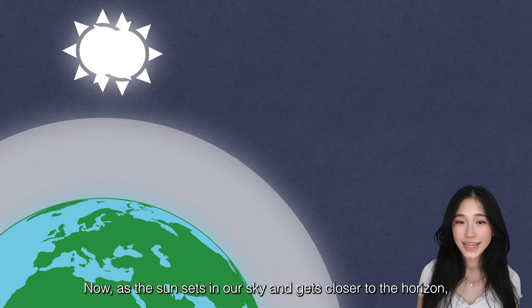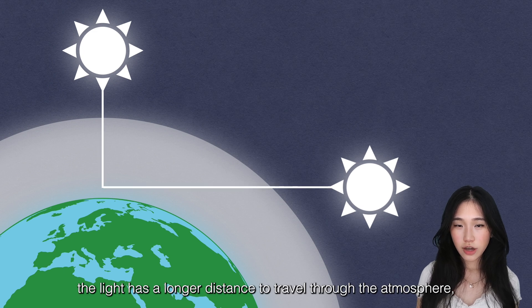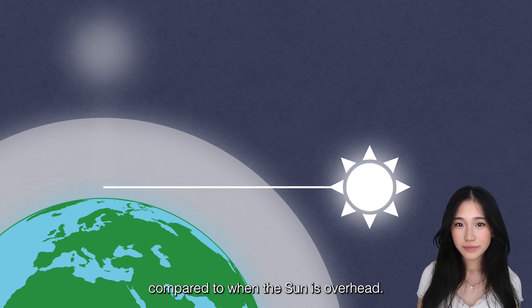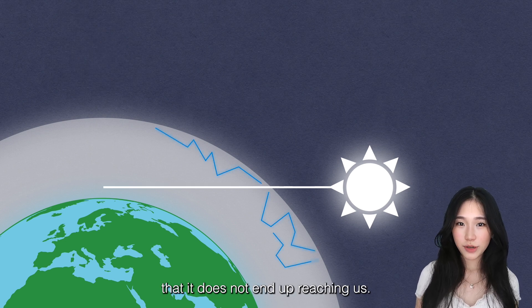Now, as the Sun sets in our sky and gets closer to the horizon, the light has a longer distance to travel through the atmosphere compared to when the Sun is overhead. The blue light starts scattering so much that it does not end up reaching us at all.